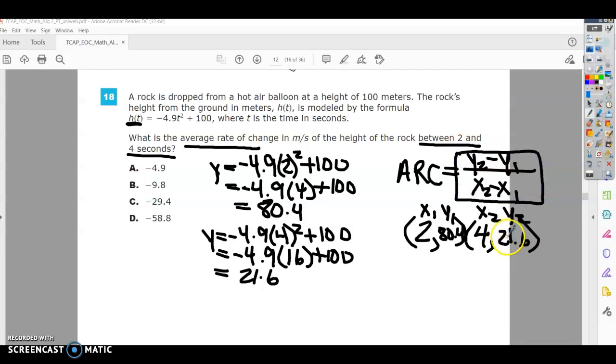So y2, so I'm going to have 21.6 minus 80.4, divide that by 4 minus 2, and then simplify. So 21.6 minus 80.4 is negative 58.8.